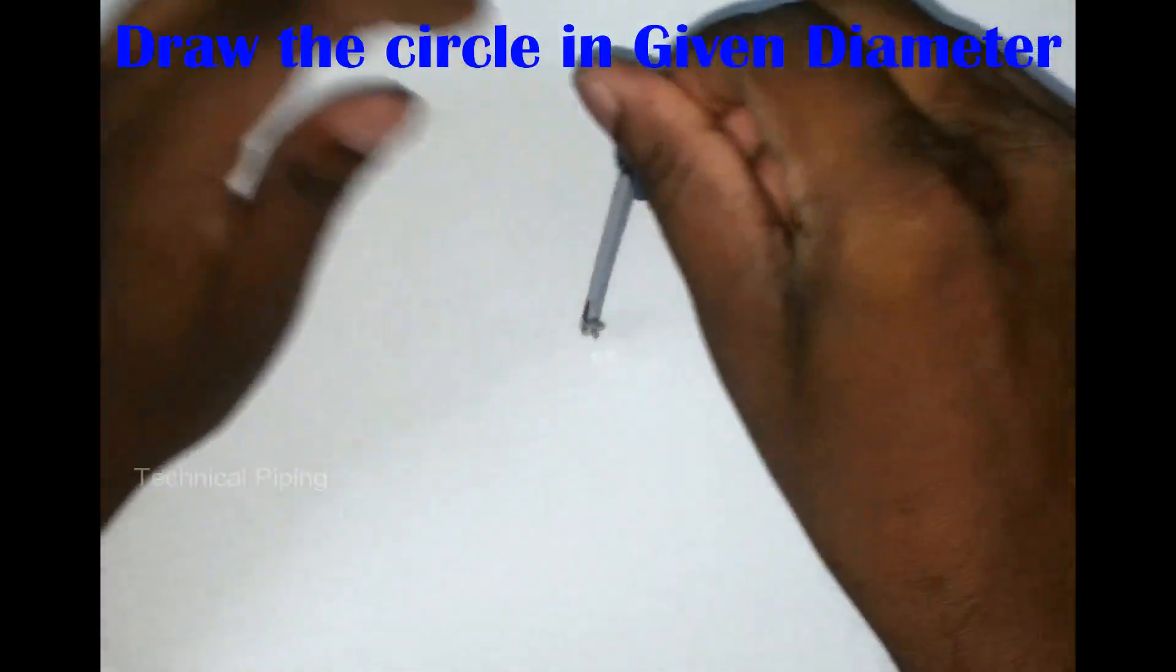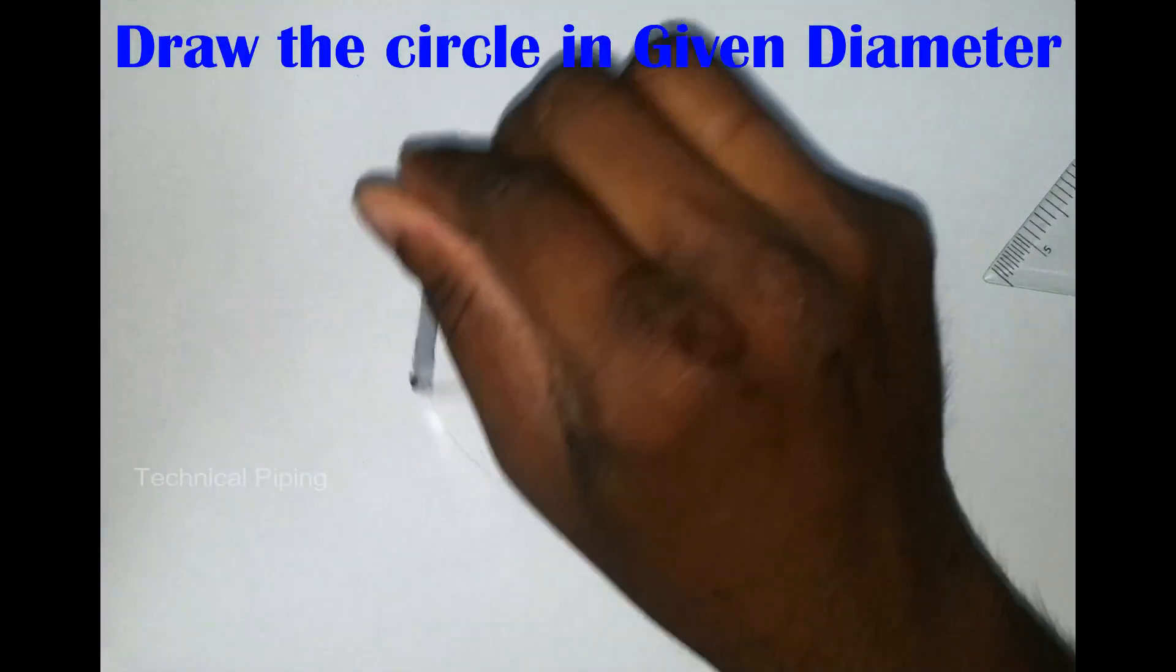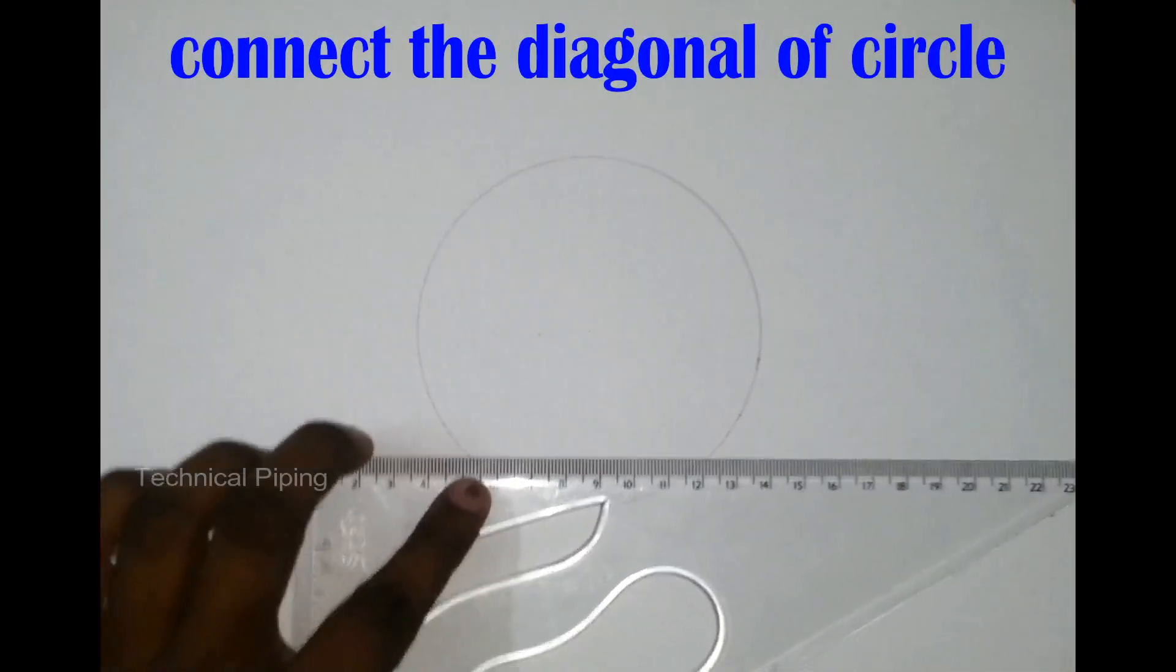First, draw the circle as a given diameter and now connect the diagonal of the circle.